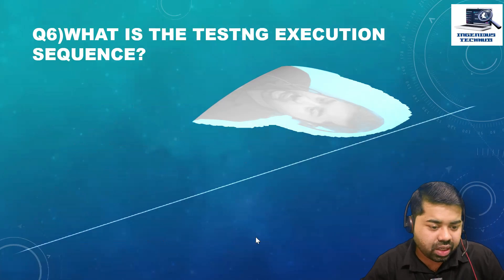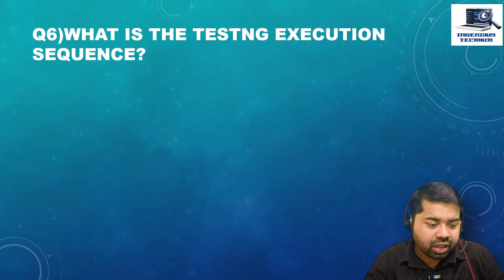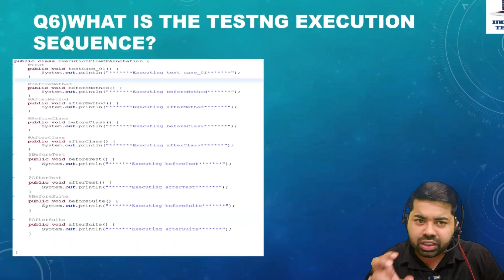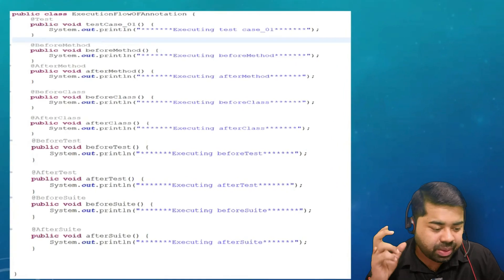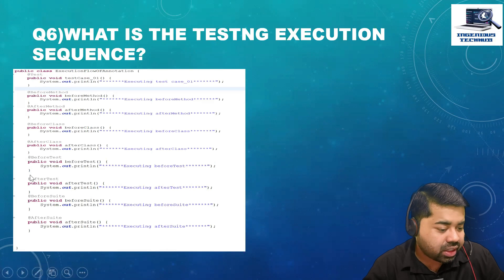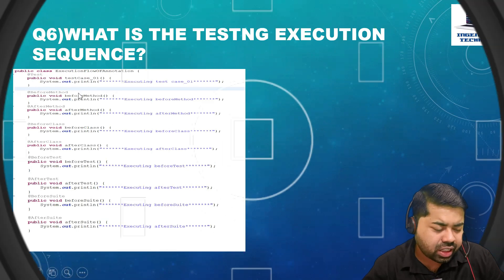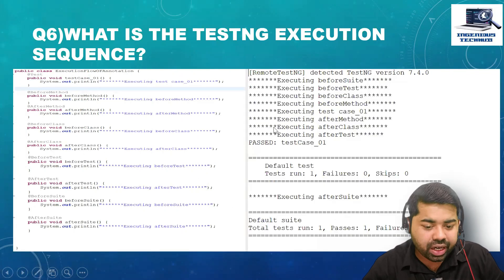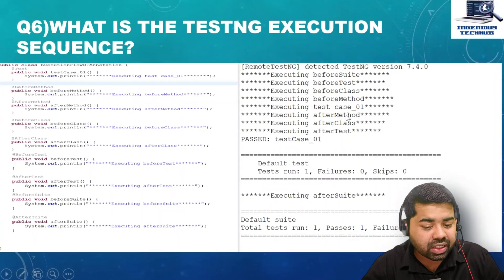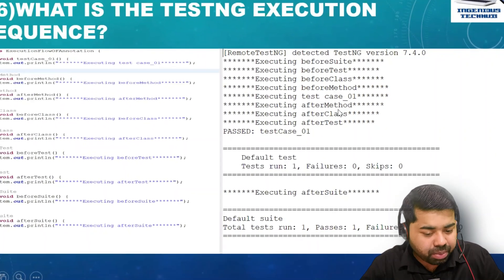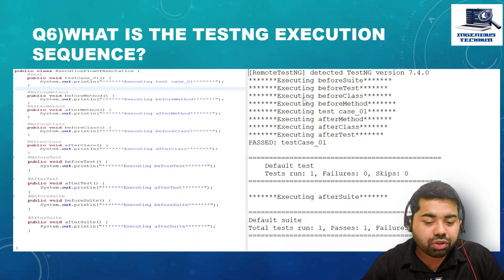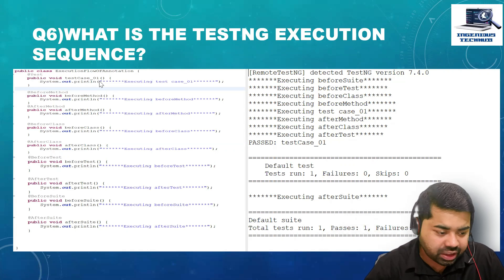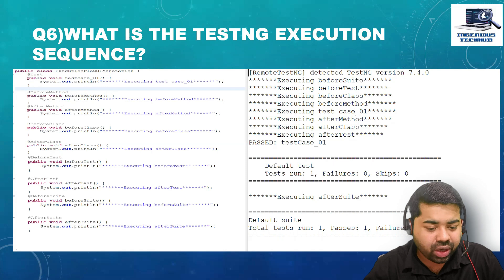What is the test execution sequence in TestNG? We have multiple annotations. I have a snapshot here. The sequence is: Before Suite executes first, then Before Test, Before Class, Before Method, then the Test itself. After that, it is vice versa: After Method, After Class, After Test, and finally After Suite. Sometimes they will ask you to tell the sequence — try to execute this code in your system to remember it.